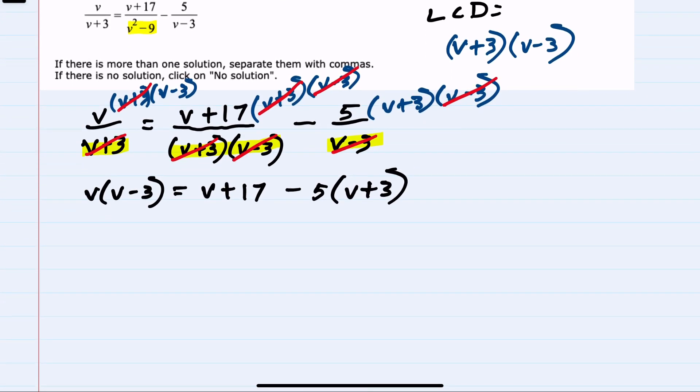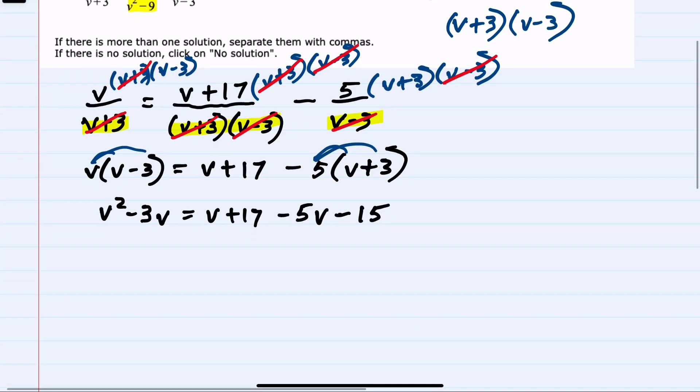I can start to simplify by distributing to get rid of these parentheses. V times V is V squared, V times minus three is minus three V. On the right-hand side, I need to distribute this negative five times V as negative five V and negative five times three as minus 15. So no more parentheses. I have some like terms I can combine on the right-hand side. V minus five V combines to minus four V, plus 17 minus 15 combined to be plus two.